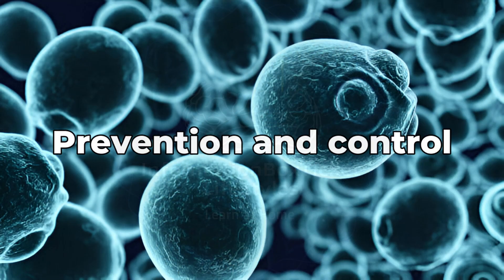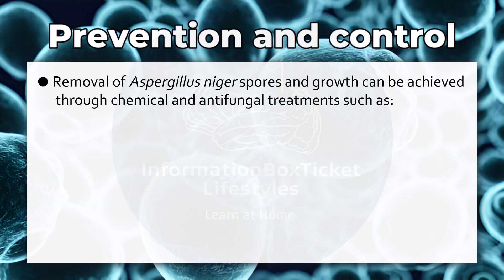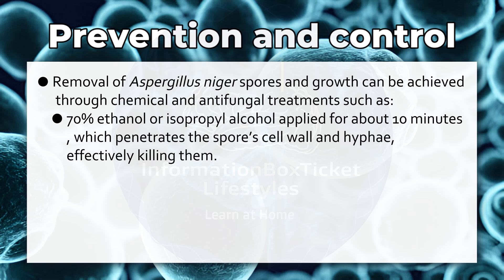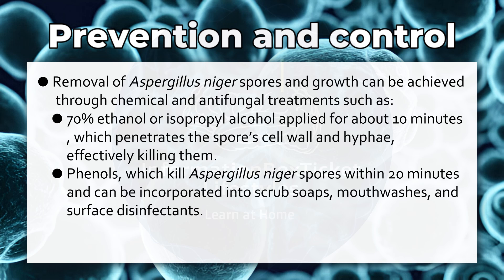Prevention and Control of Aspergillus niger. Removal of Aspergillus niger spores and growth can be achieved through chemical and antifungal treatments such as 70% ethanol or isopropyl alcohol applied for about 10 minutes, which penetrates the spores, cell wall, and hyphae, effectively killing them. Phenols kill Aspergillus niger spores within 20 minutes and can be incorporated into scrub soaps, mouthwashes, and surface disinfectants.